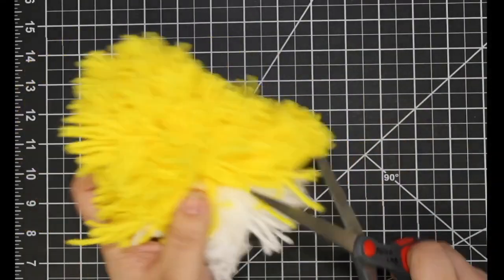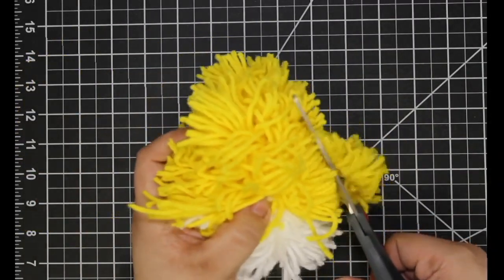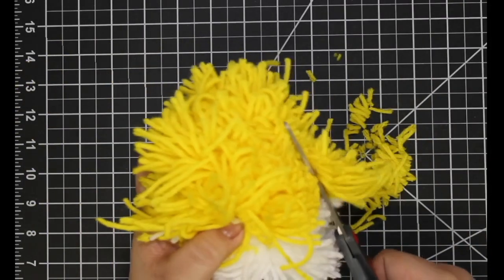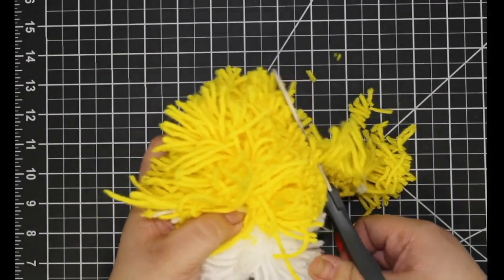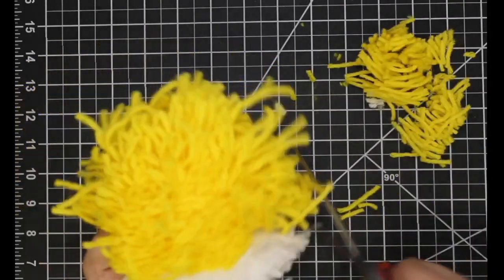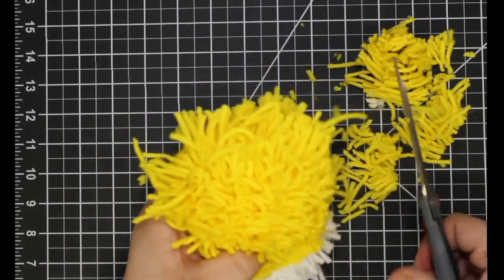Now that you have cut all the yarn loops, you will begin to cut and shape your chick. This part is best done over a large cutting mat or trash can as it will get very messy very quickly.